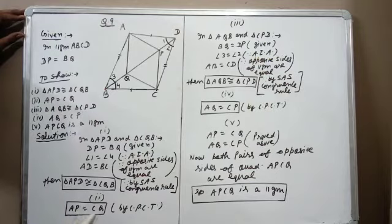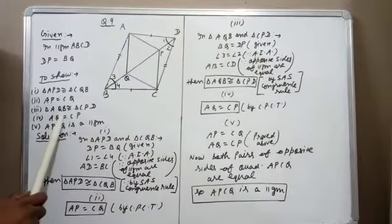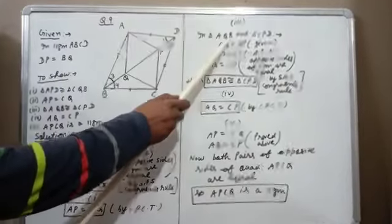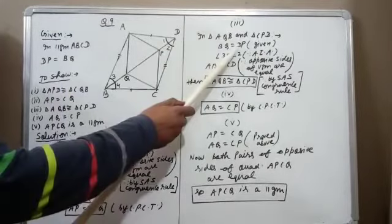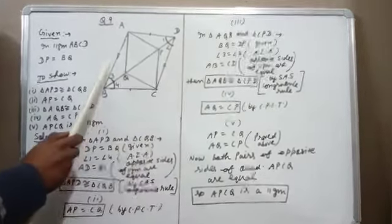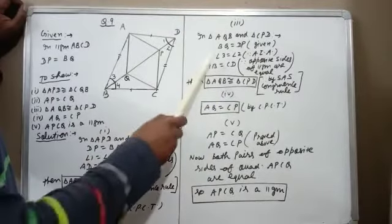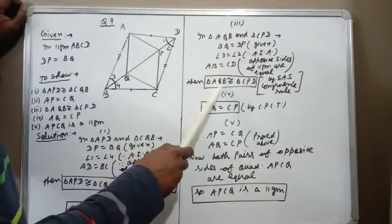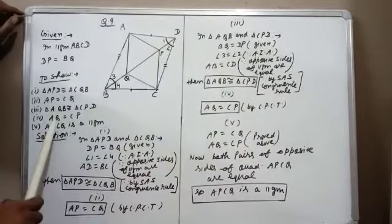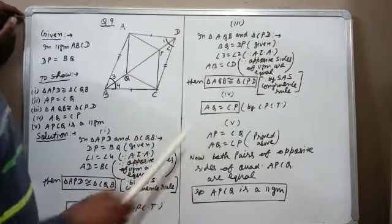For the third part, in triangles AQB and CPD: BQ equals DP (given); angle 3 equals angle 2 (alternate interior angles); AB equals CD (opposite sides of parallelogram). By SAS congruence, triangle AQB is congruent to triangle CPD. Therefore, AQ equals CP by CPCT.